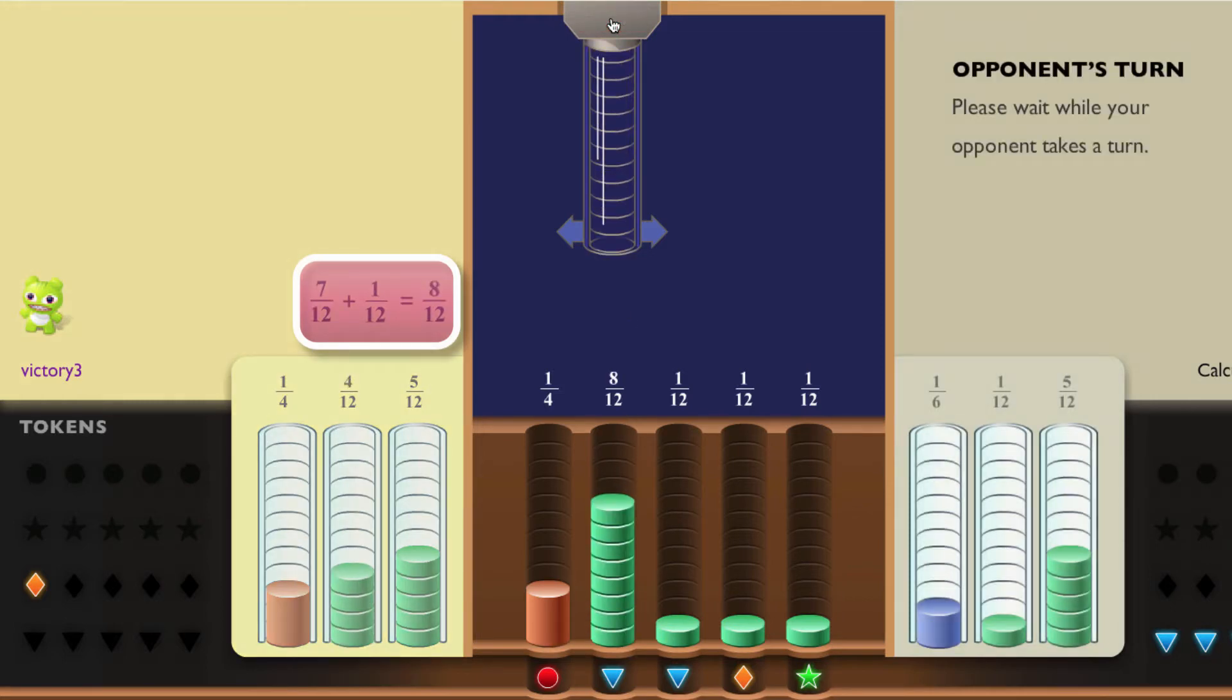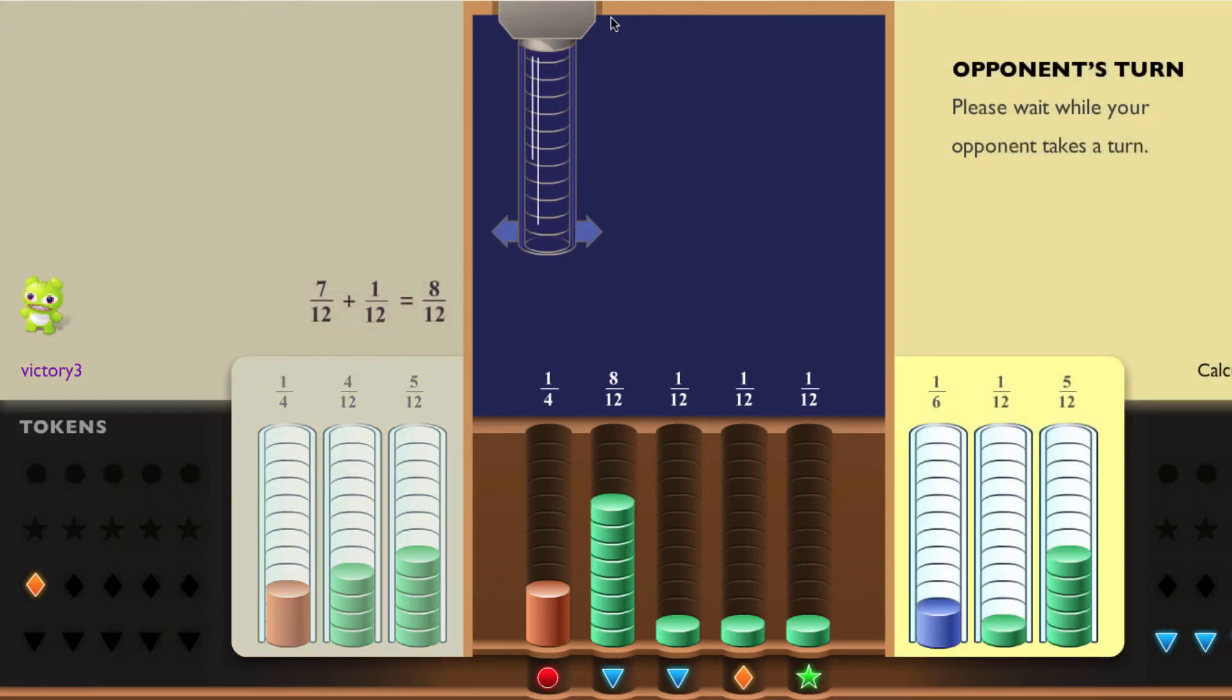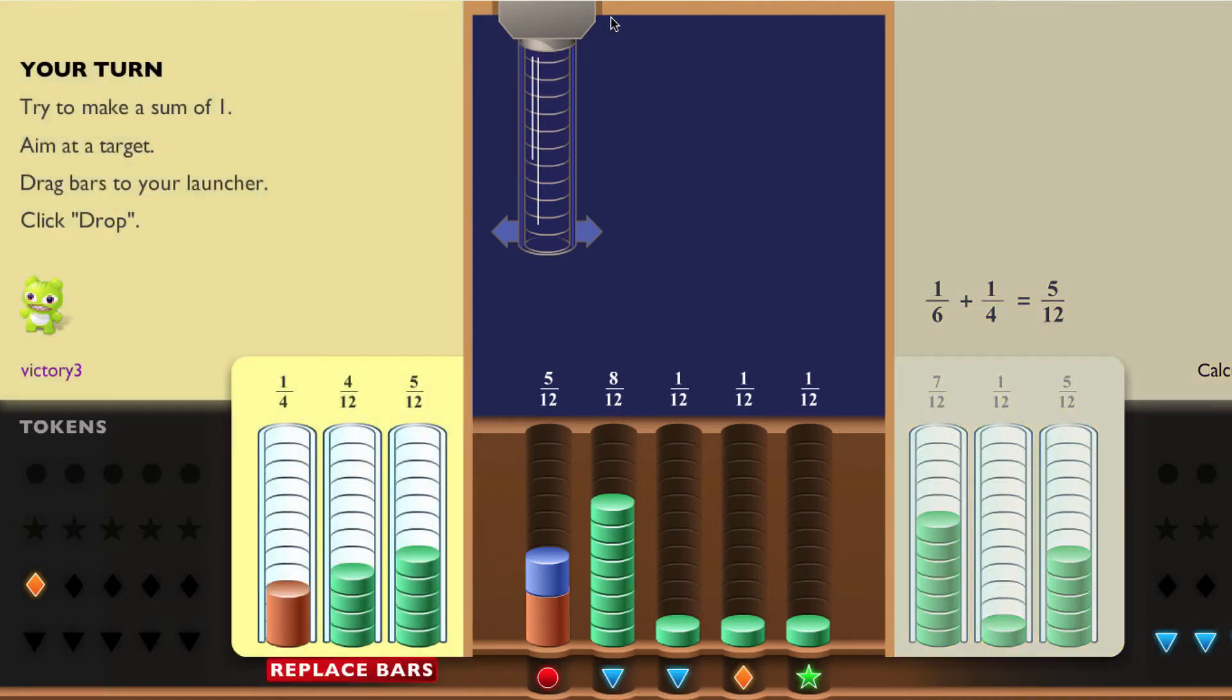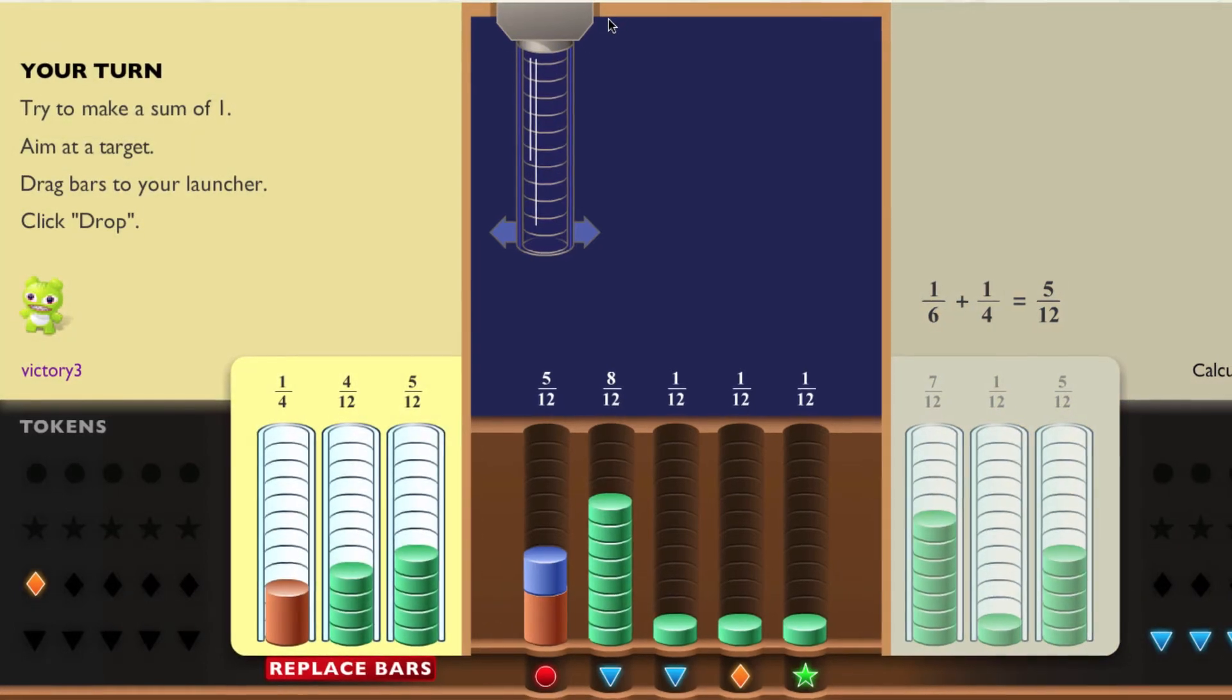A lot of thought went into how the computer would play the game, and we decided that as students get better at the game and their level goes up, the computer will play better. So at this lowest level, the computer makes mistakes.